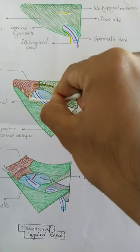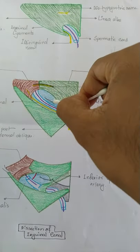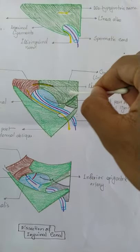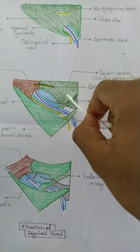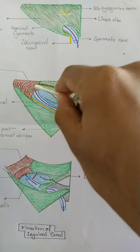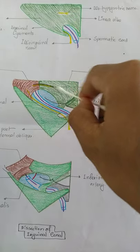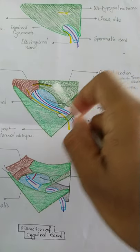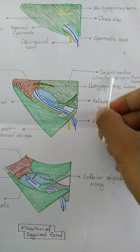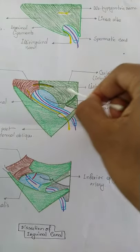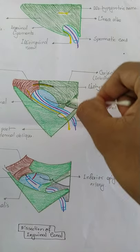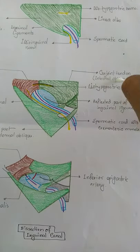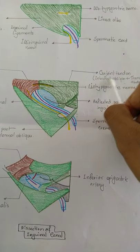These two layers — the internal oblique and transversus abdominis — form the roof of the inguinal canal. So the roof of the inguinal canal is formed by the internal oblique and transversus abdominis.